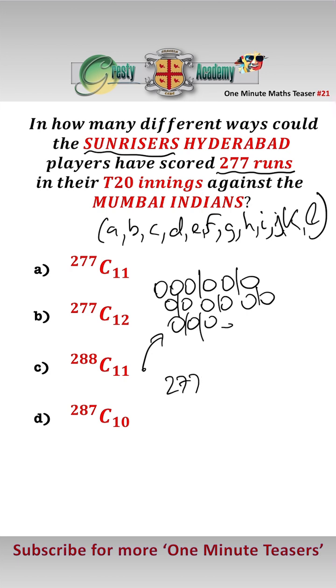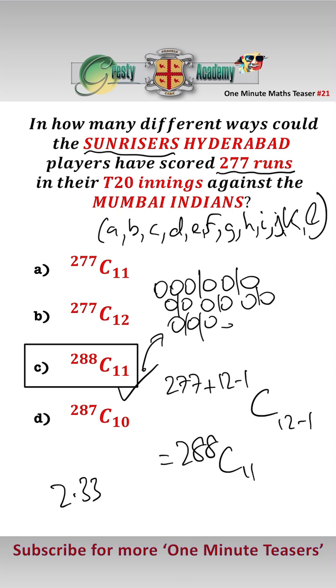which gives us 277, add 12 minus 1, C, 12 minus 1, which equals 288, C, 11, which is answer number C, which is around 2.33 times 10 to the 19 different ways.